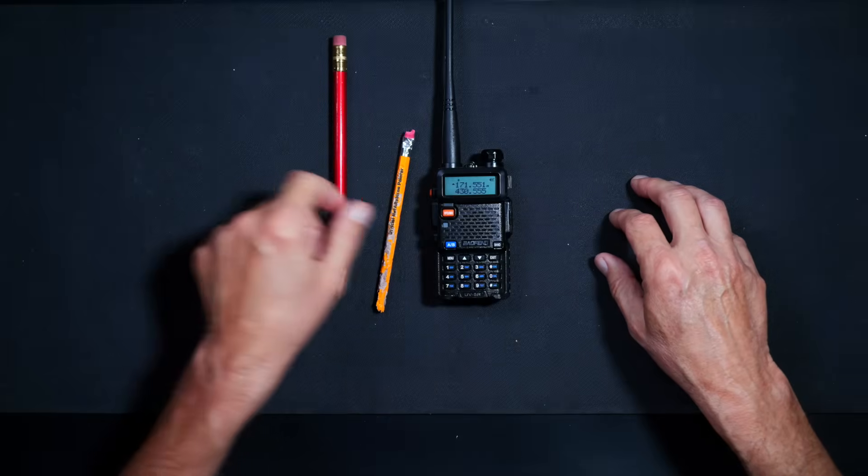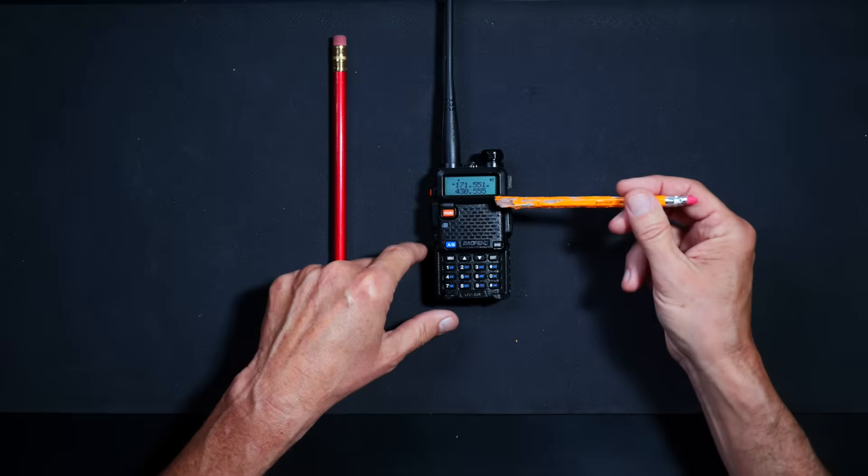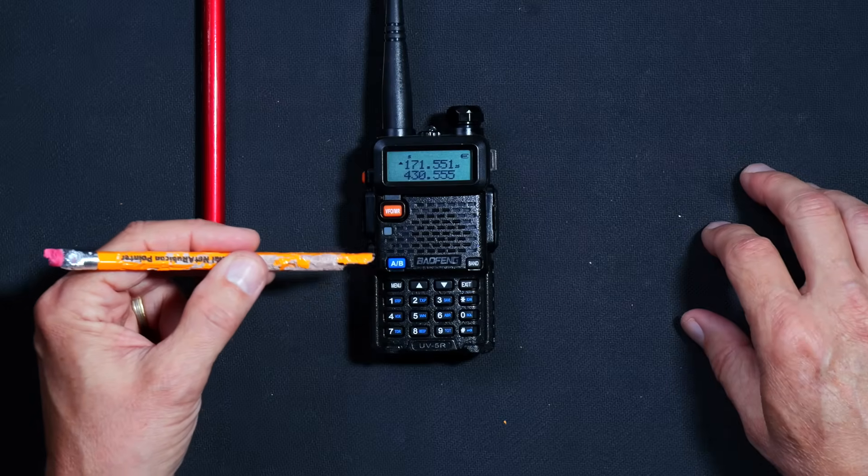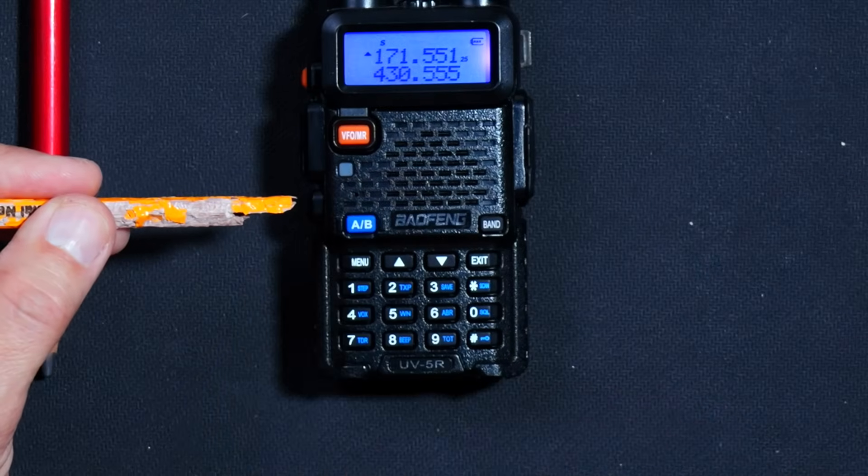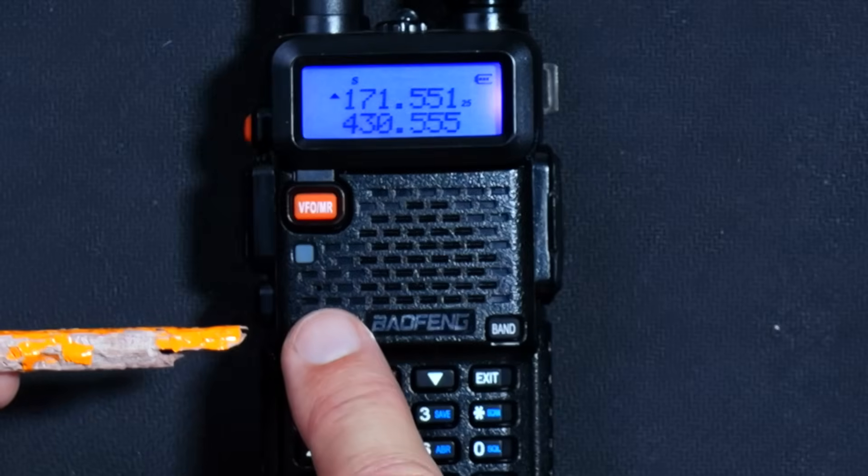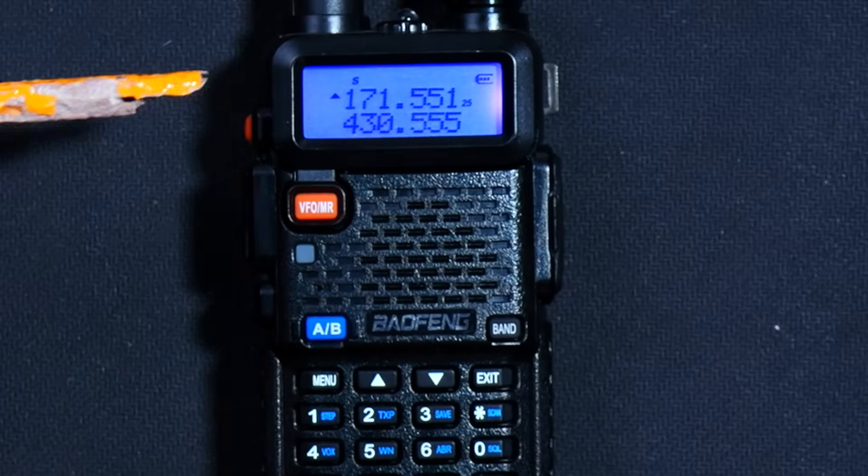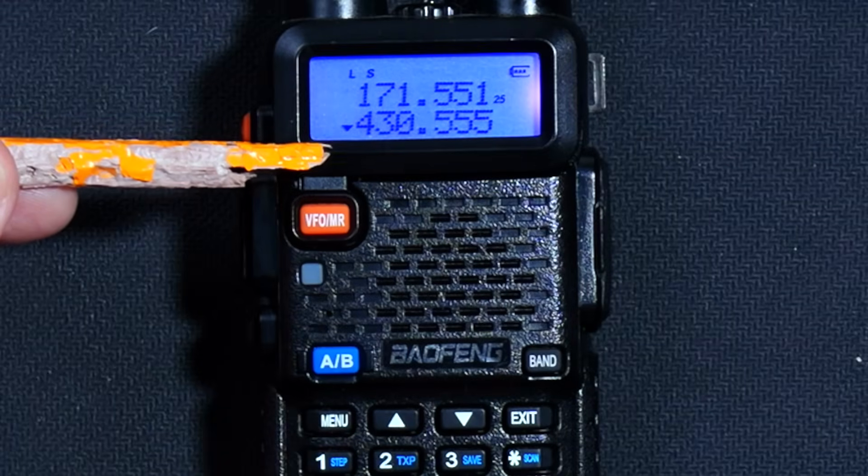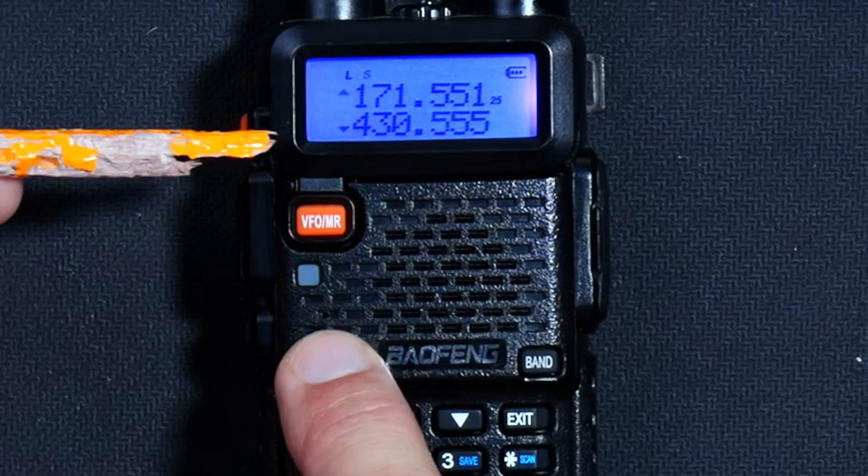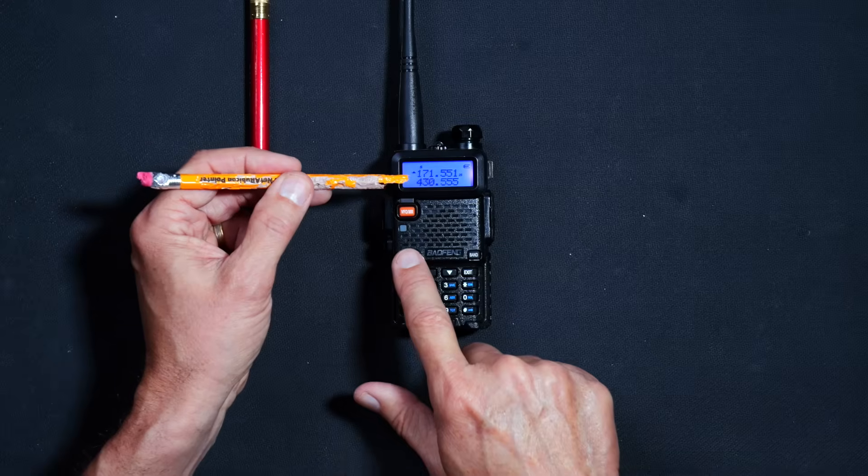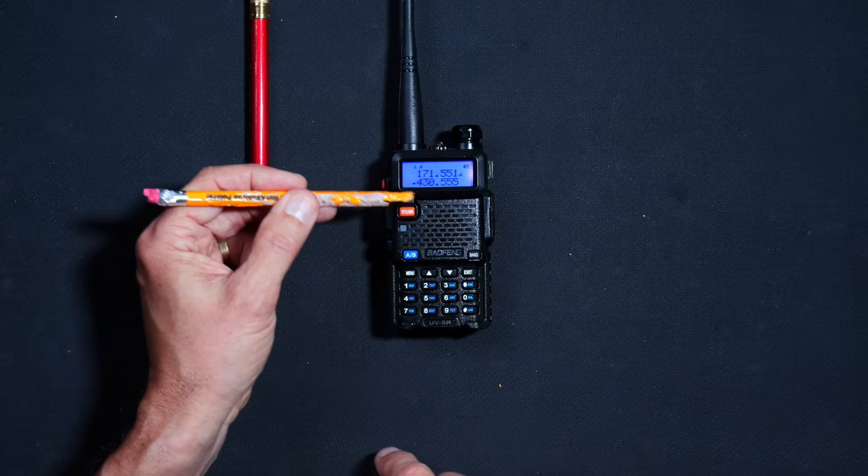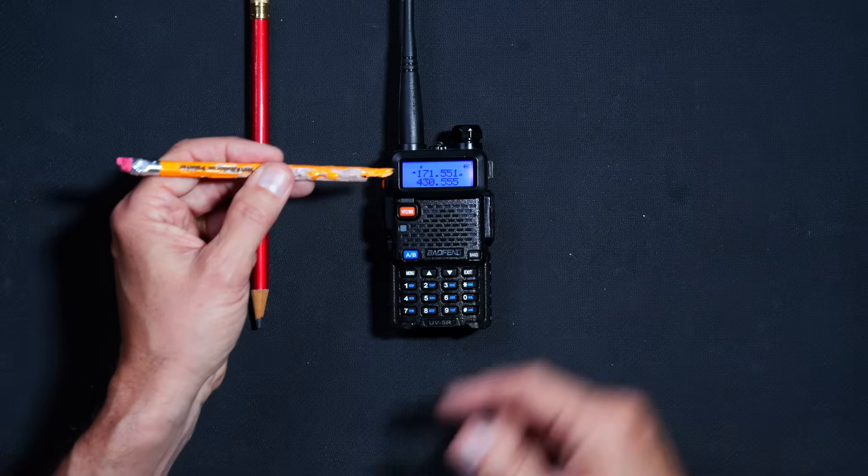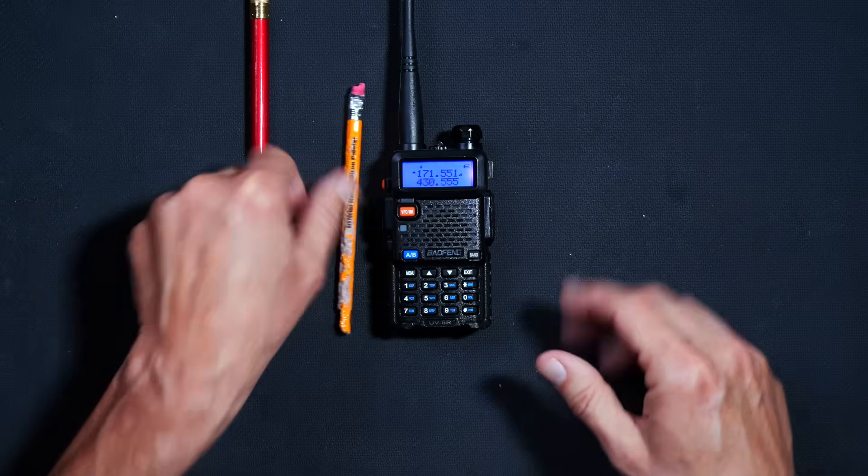Once you decide if you want to put your NOAA weather frequency on the top line or the bottom line, simply press the A-B button to select that line. You will notice that each time you press the A-B button, the little selection icon moves from line A to line B, indicating which line you are on and which line the radio is ready for you to change or input. For this demonstration, I have chosen line A.